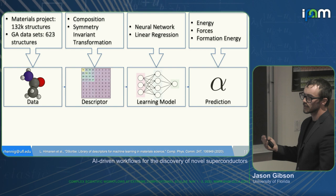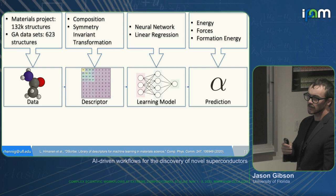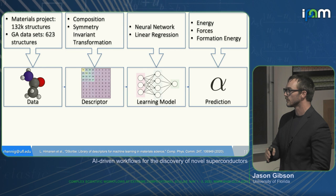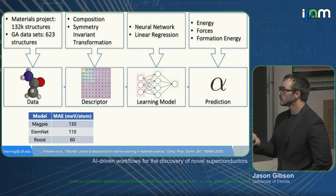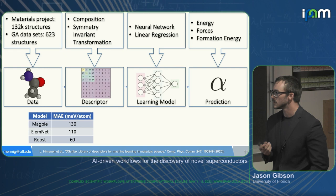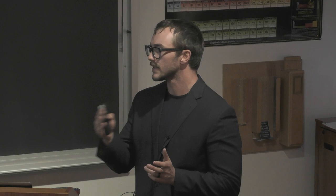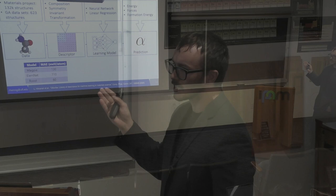The issue with invariant transformations is that as we increase the number of elements, the dimensionality of our descriptor scales poorly, making it infeasible to make predictions across the periodic table. With compositional-based embeddings, we've seen decent formation energy predictions, but with the genetic algorithm, materials come at very discrete compositions, and we're unable to distinguish between multiple metastable states at the same composition.